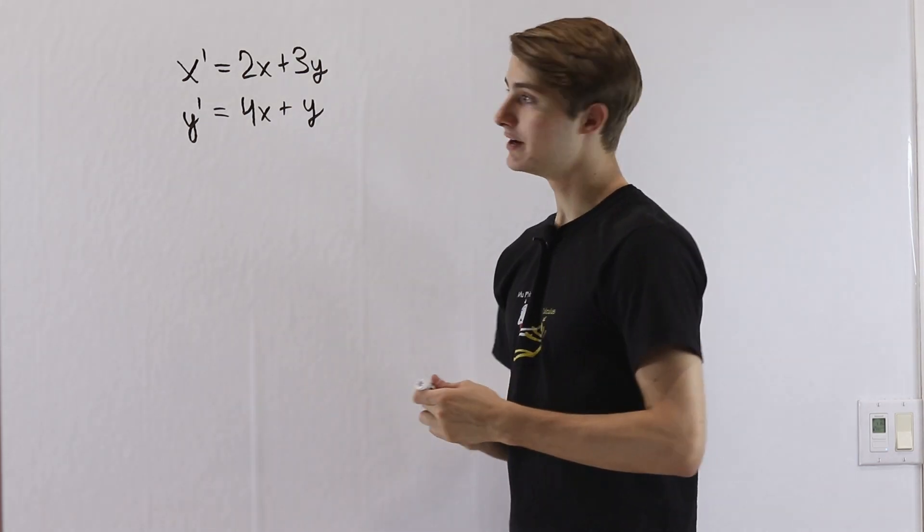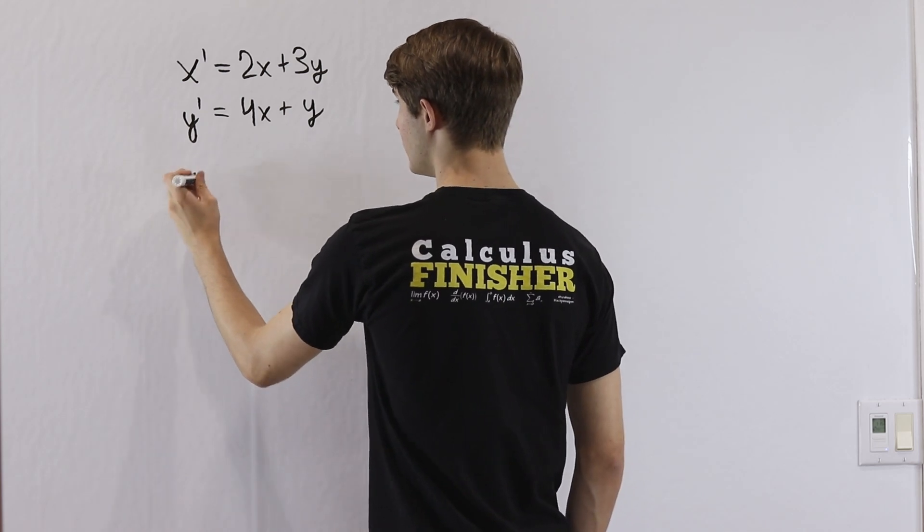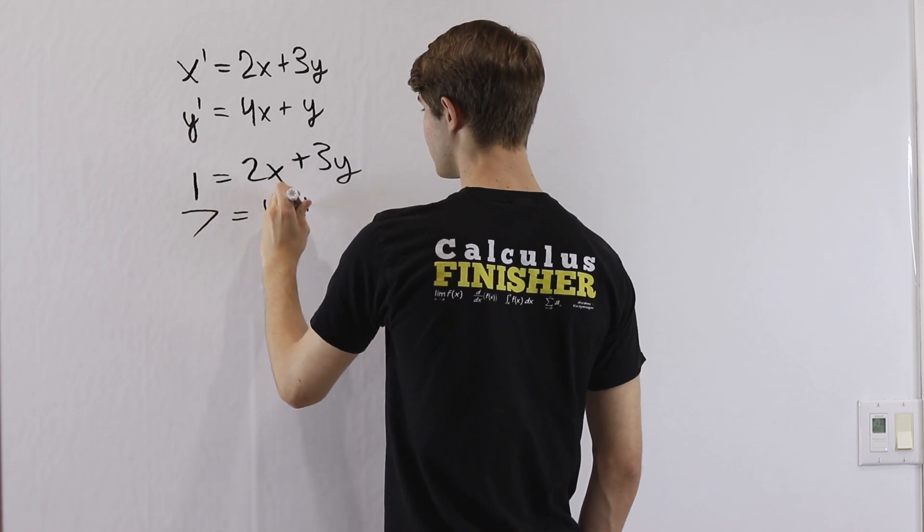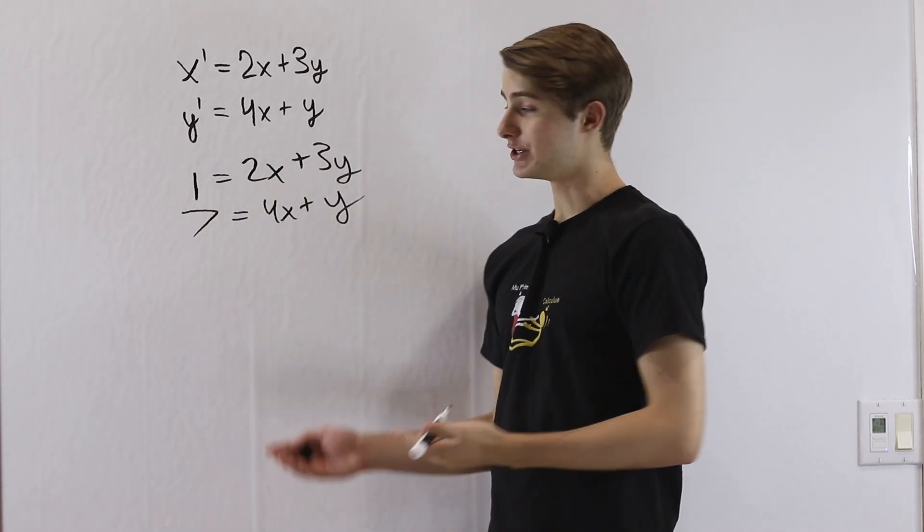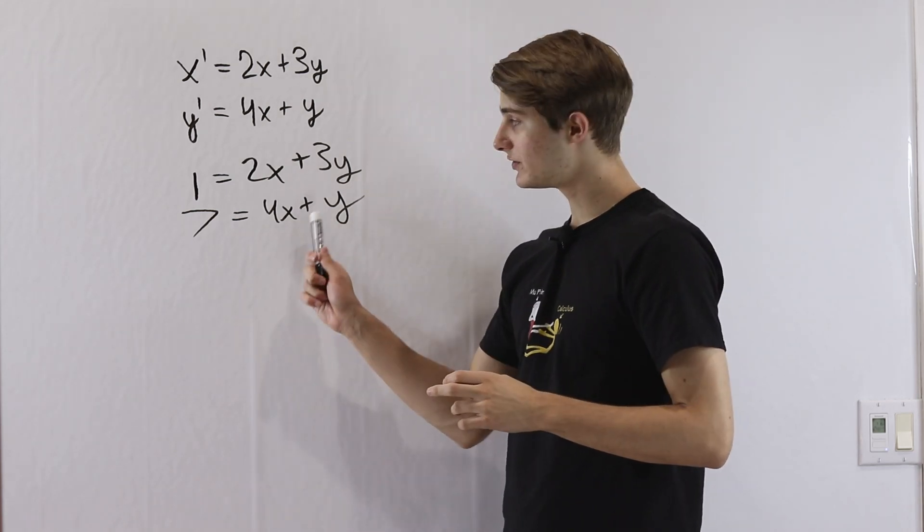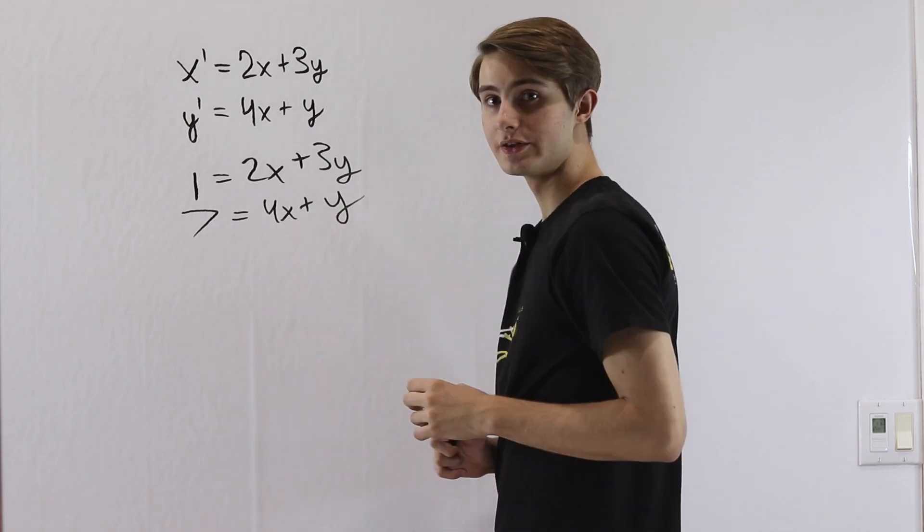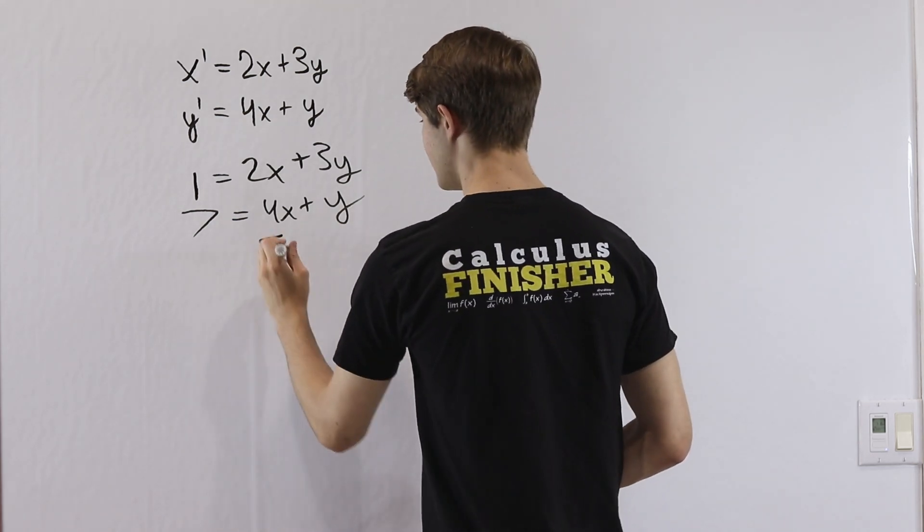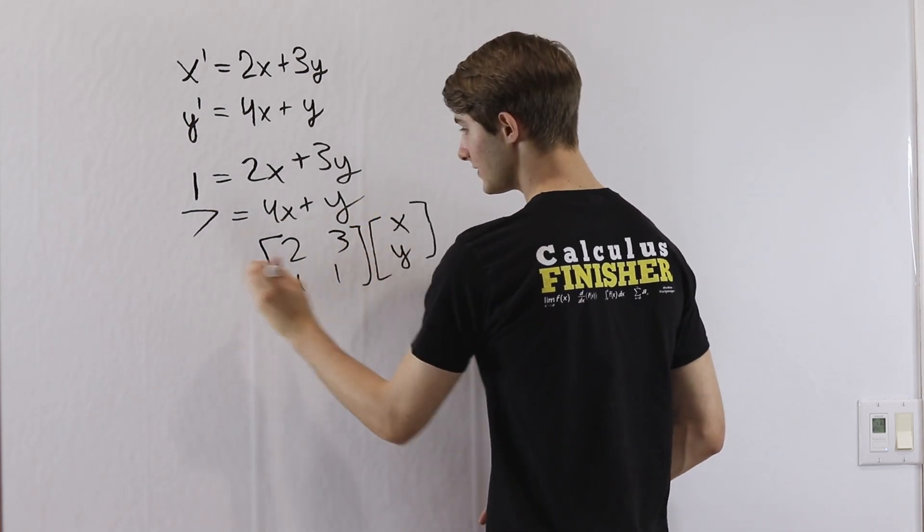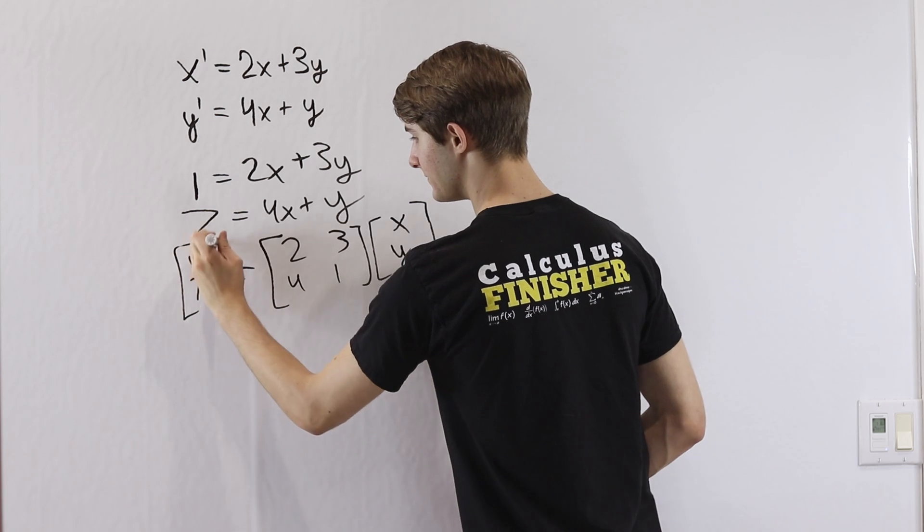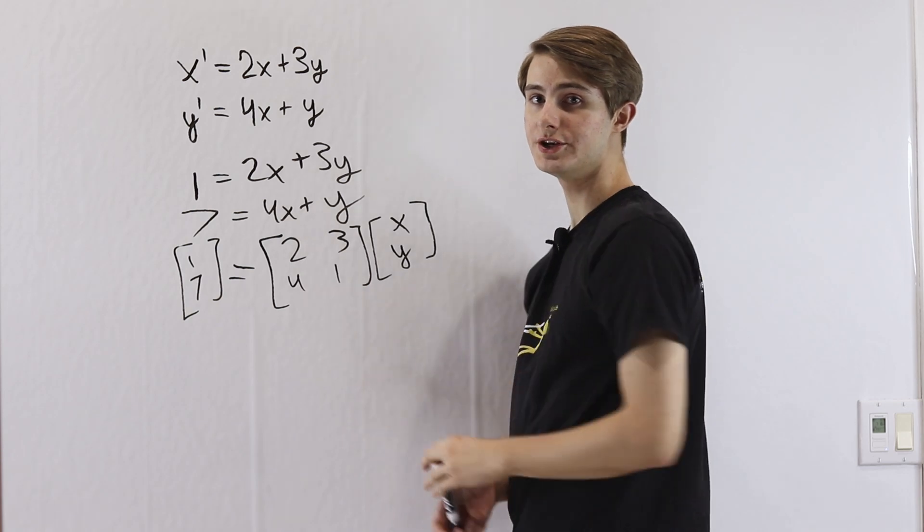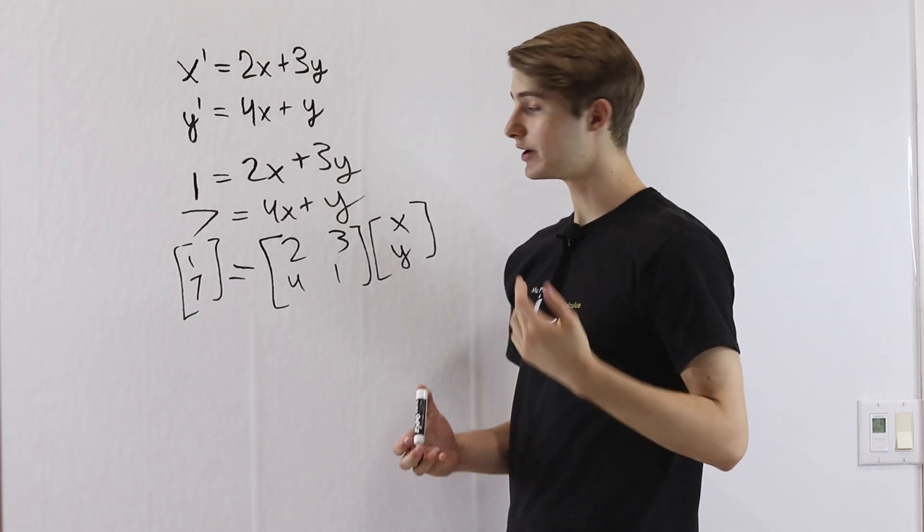In order to do that I'm going to present a different type of equation. If we had 1 equals 2x plus 3y and 7 equals 4x plus y. This is a system of equations. It's not differential equations anymore. This is just solving for x and y as numbers. One way that we can solve this kind of system is to write the right side of the equation as the matrix 2, 3, 4, 1 times the vector x, y and set that equal to 1, 7. And this is helpful for us because it takes two equations and turns them into one equation, which lets us do some fun manipulations that are otherwise pretty difficult.